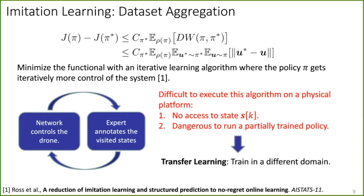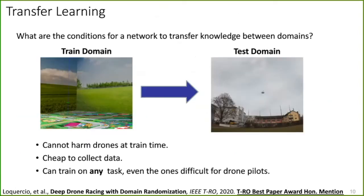Therefore, what I've proposed is to use transfer learning, which is to train in a different domain, for example simulation. Transfer learning is very appealing. If we train in simulation and test in the real world, we cannot harm any platform at training time. It's very cheap to collect data, and we can train on any task, even ones difficult for human pilots. But the question is, how can we transfer this knowledge between domains?